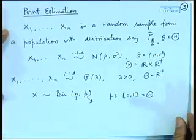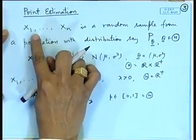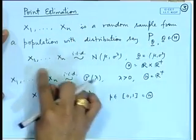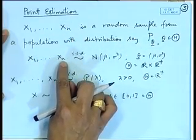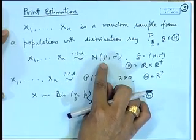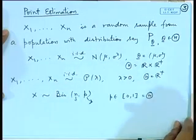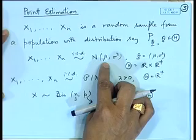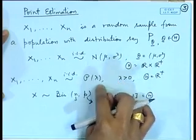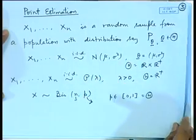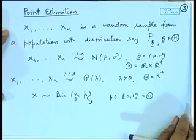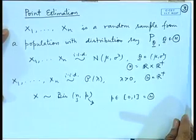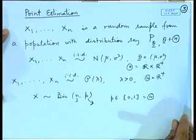In any inference problem, we start with the model that we have a random sample from a given population — that means identically and independently distributed random variables from a given population. Our objective is to make certain inferences about the parameters of the population in the form of point estimation, interval estimation, or confidence interval. For now, we restrict attention to the problem of point estimation.